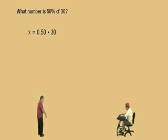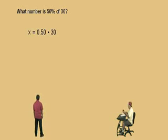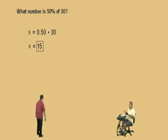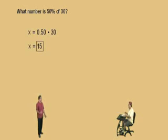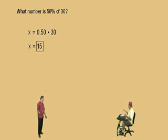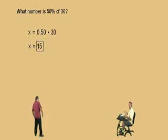Very easy. You got your calculator out, Charlie? What's 0.50 times 30? Fifteen. That's right. So 15 is 50% of 30. Remember, on the exam, the most important part is to write out the equation, Charlie. I don't care about the answer. I want the equations written, right?